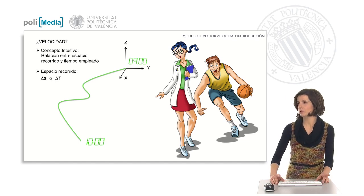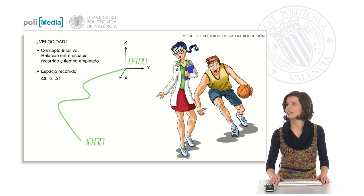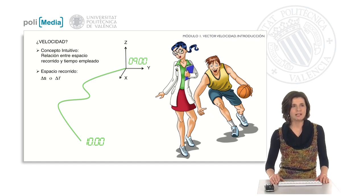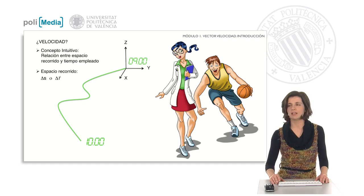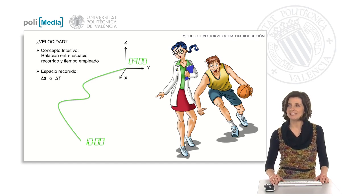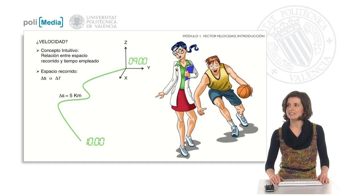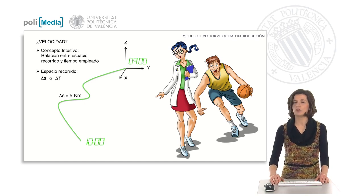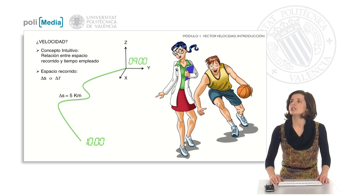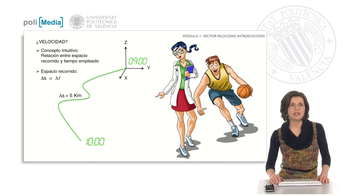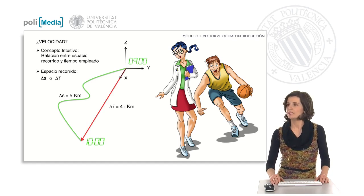The intuitive concept of velocity is the ratio between the space traveled and the time spent. But in the last class we saw that there are two physical quantities that refer to the space traveled. One is the increment of s — the space traveled over the trajectory, in this case 5 kilometers. The other is a vector magnitude, the displacement vector, which in this case equals 4 kilometers.